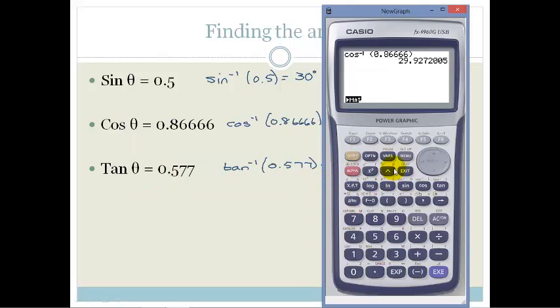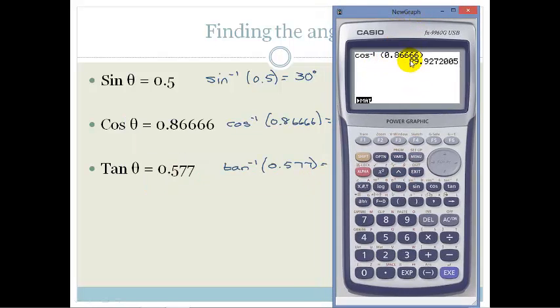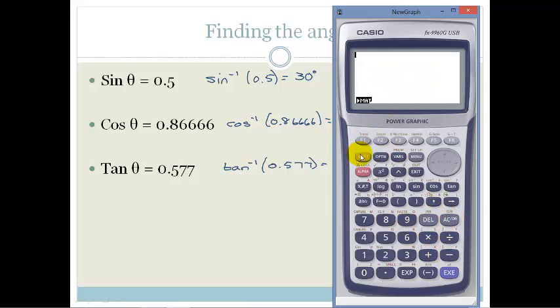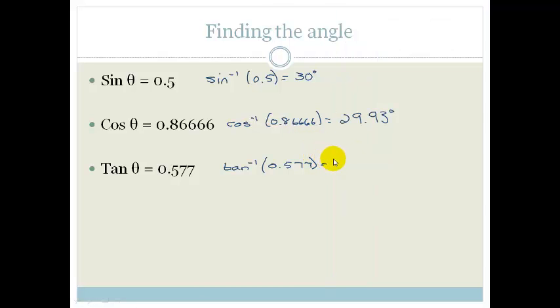And then, let's do tan. So do you see that it doesn't matter whether I put the bracket in or not, I'm going to get the right answer. Let's try tan. So it's going to be shift tan. So whenever you are getting the angle, you use shift of that degree. So shift sin, shift cos, shift tan gets us to the inverse. And then, let's open a bracket, 0.577, close the bracket, equals 29.984. So it just stays 29.98.